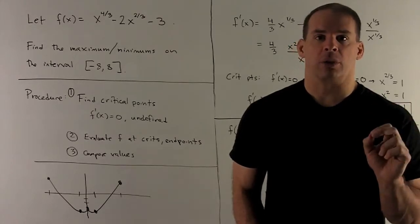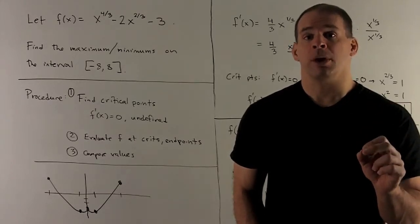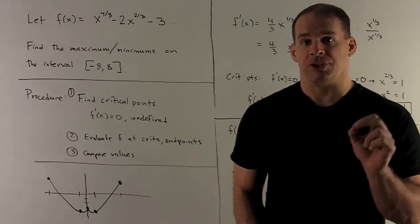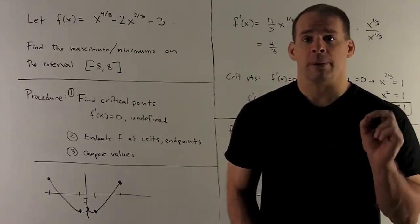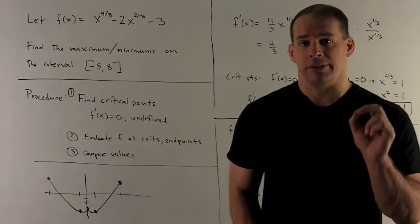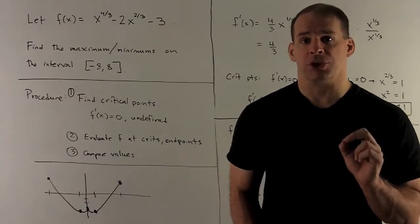Second step, we're going to take those critical points and the endpoints, and evaluate our function at each of those points. Then last step, we'll compare all the values that come out. That's where you find your maximums and your minimums.